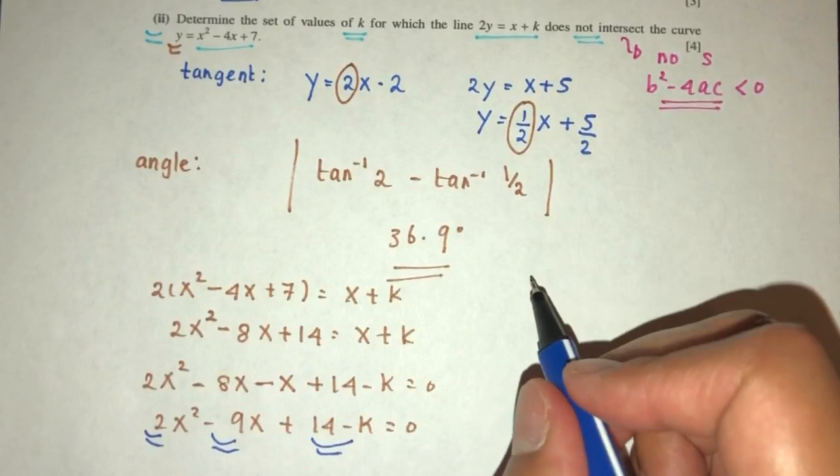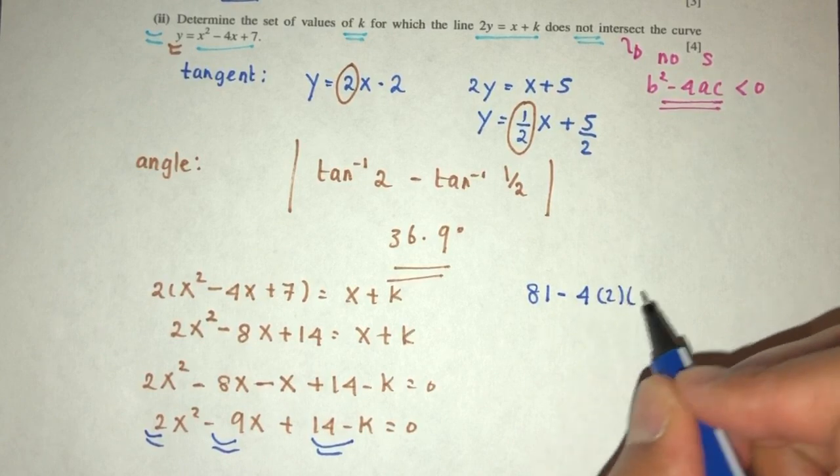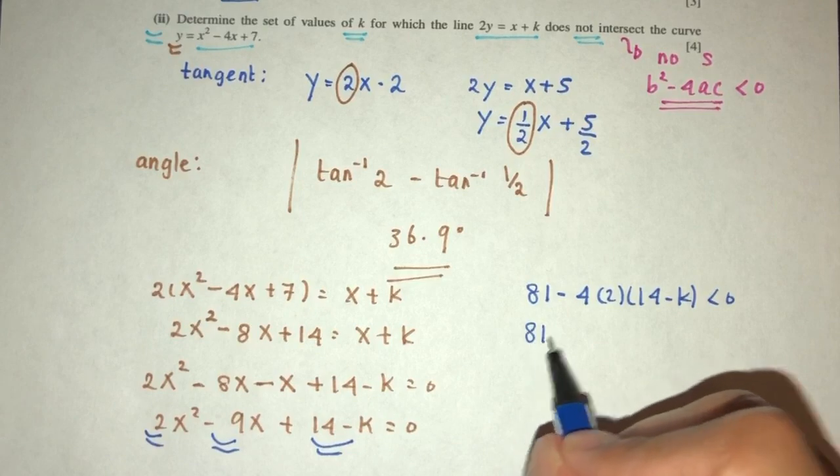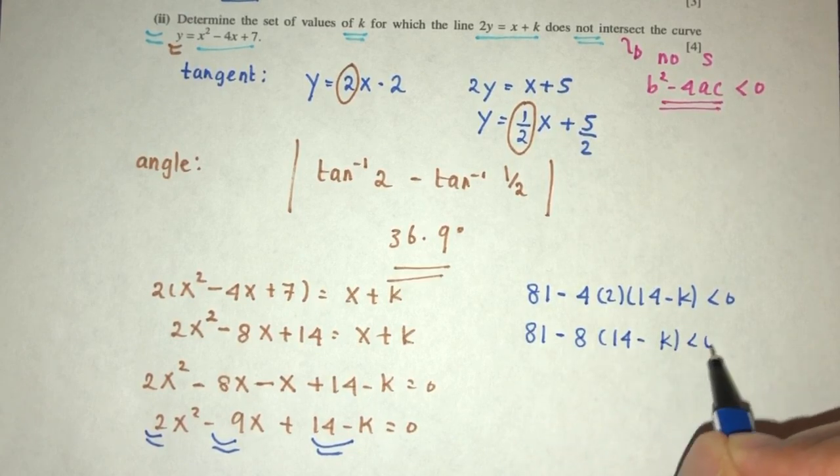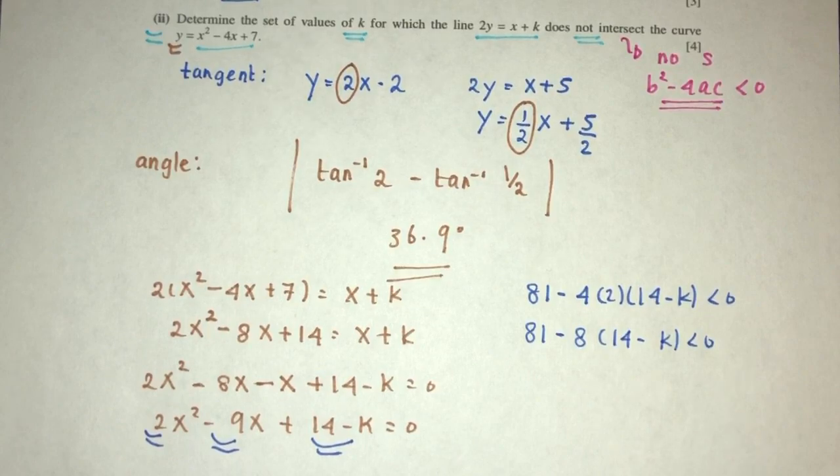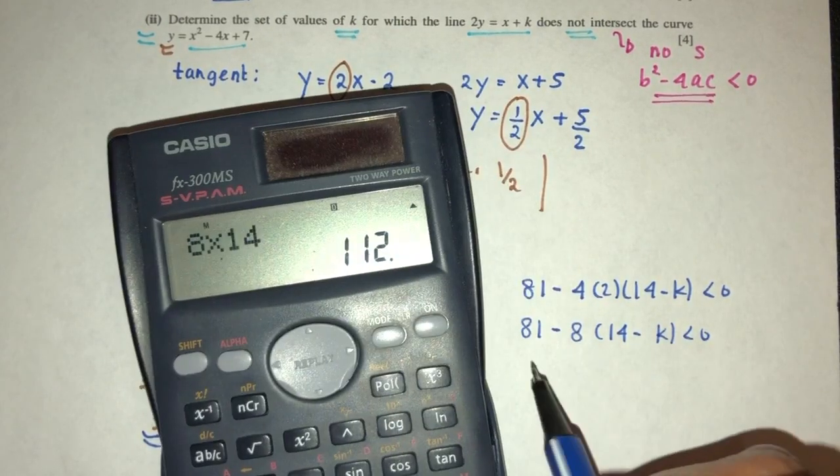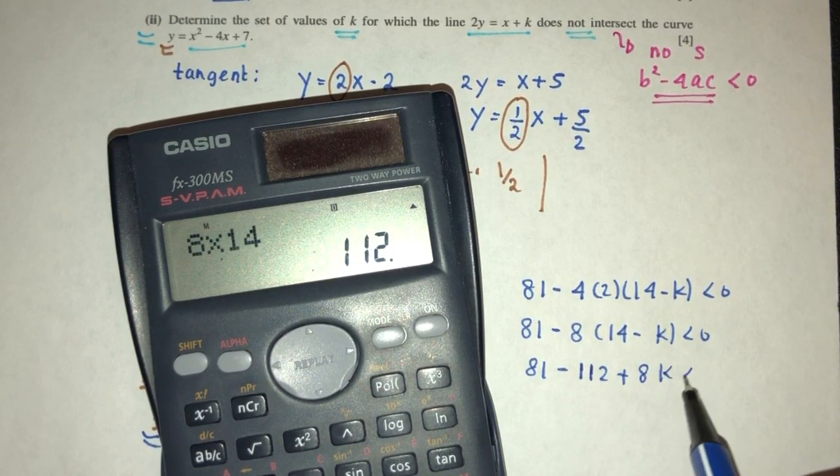You have b squared is minus 9 squared. It is 81 minus 4 times a times c less than 0. That should be 81 minus the value of 8 times 14 minus k. So, simplify. Let's expand. So, 8 times 14. That should be 112. So, 81 minus 112 plus 8k less than 0.